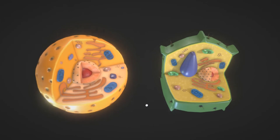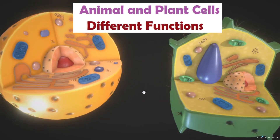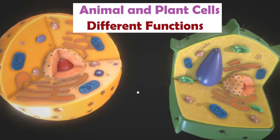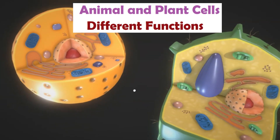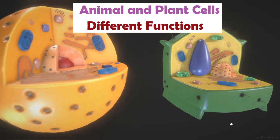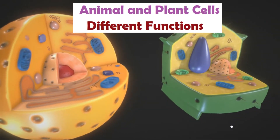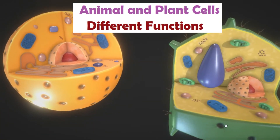Both plant and animal cells contain membrane-bound organelles like the nucleus and mitochondria. However, plant cells and animal cells do not look exactly the same or have all the same organelles, since each of them has different needs. So how are plant and animal cells similar or different, and why do they have differences? Plant and animal cells differ because they have to perform different functions.